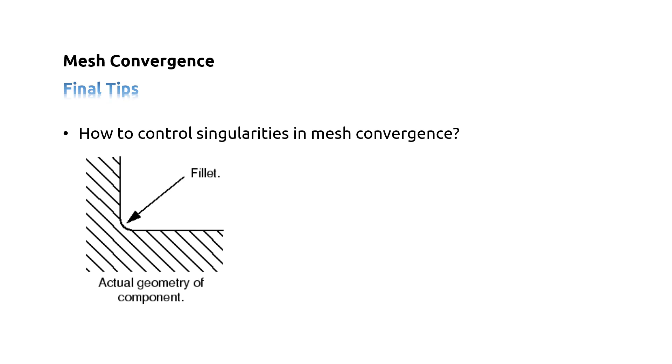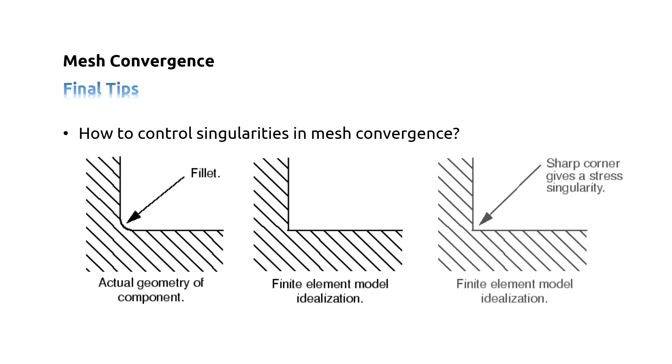The answer is, it is common to omit small details like fillet radii from a finite element model to simplify the analysis and to keep the model size reasonable. However, the introduction of any sharp corner into a model will lead to a stress singularity at that location.